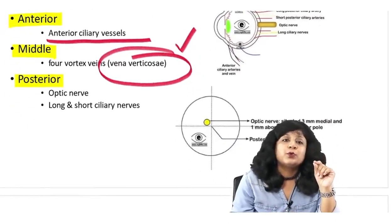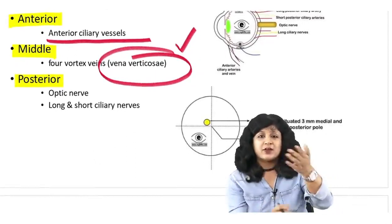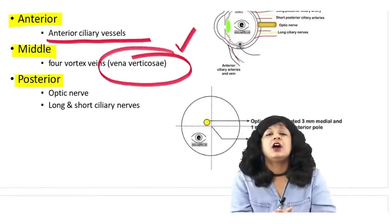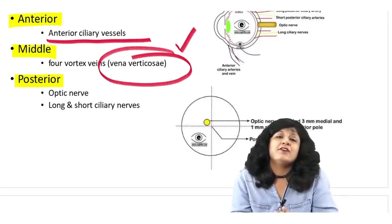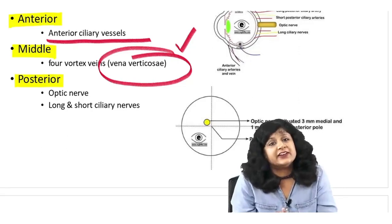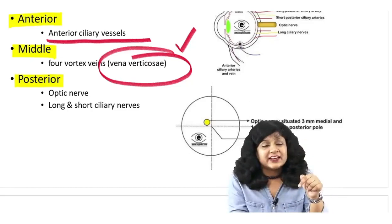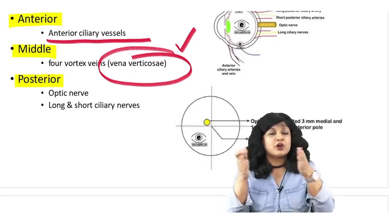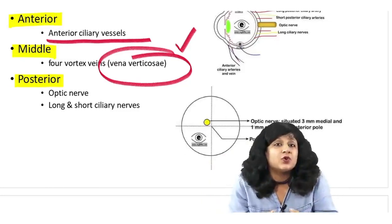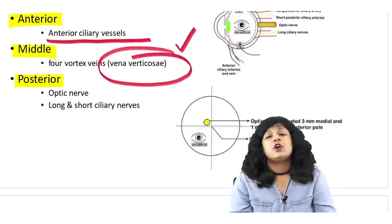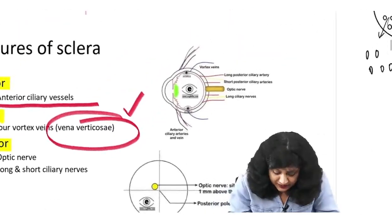Coming to the third — the posterior apertures. What are the things passing posteriorly through the sclera? One very important thing is the optic nerve, and then we have the long and short ciliary nerves. So: anteriorly — anterior ciliary vessels; middle — four vortex veins; posteriorly — the optic nerve and the long and short ciliary nerves.